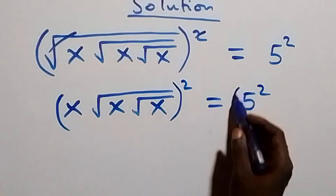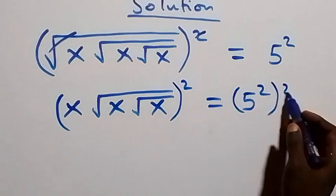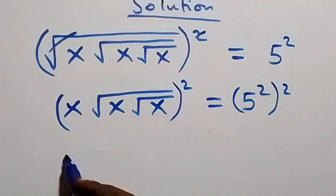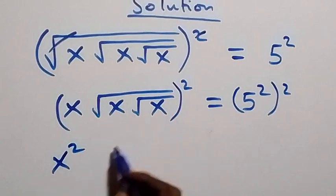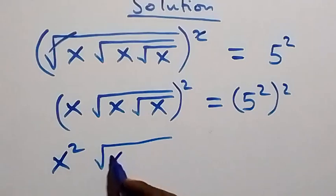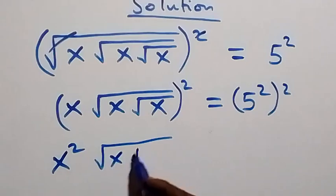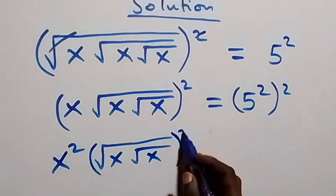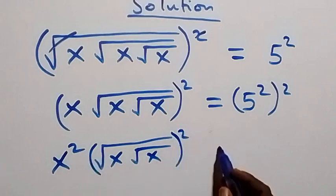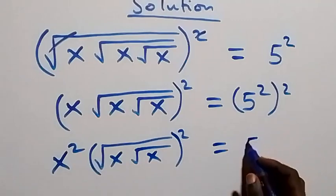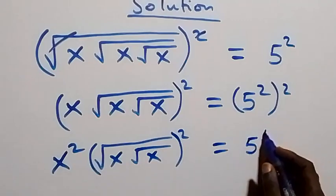We also square this side. The square affects x — we have x squared — and it will affect this square root, so we have square root of x, also squared. This power multiplies, and we have 5 raised to power 4.